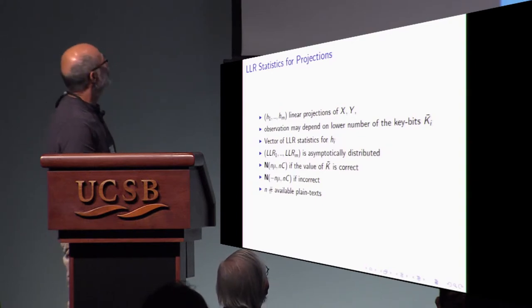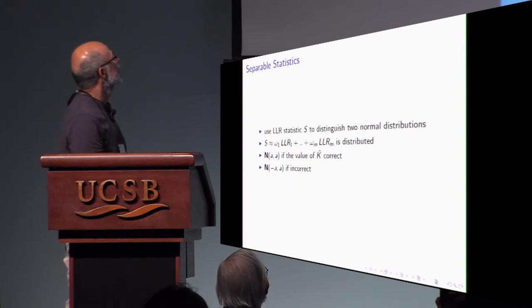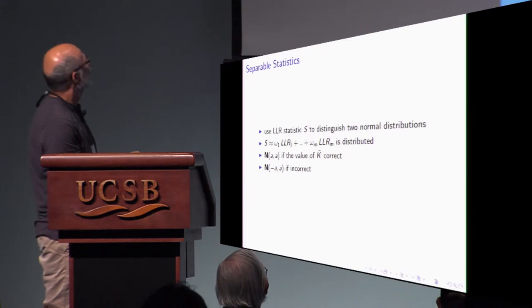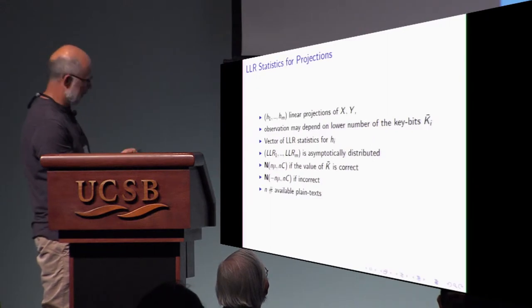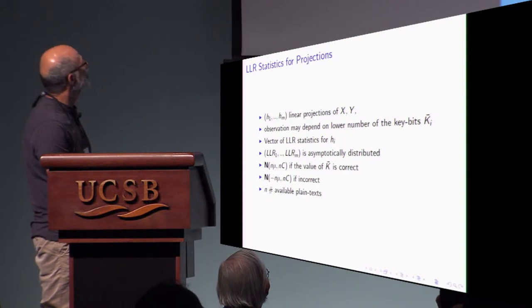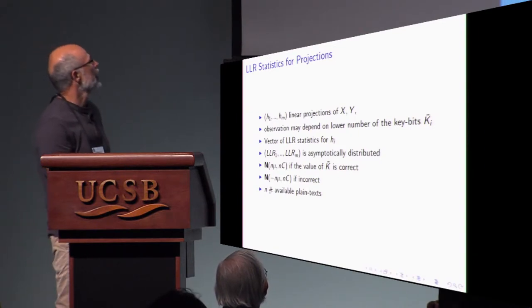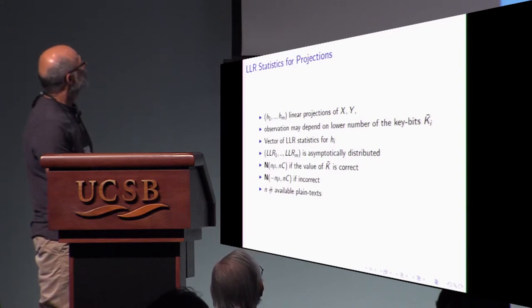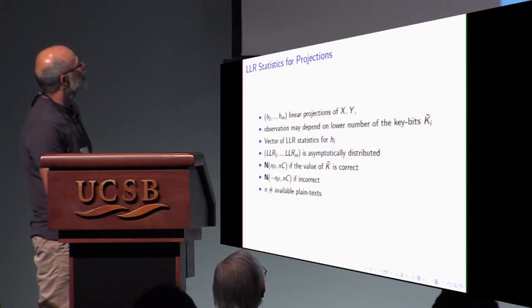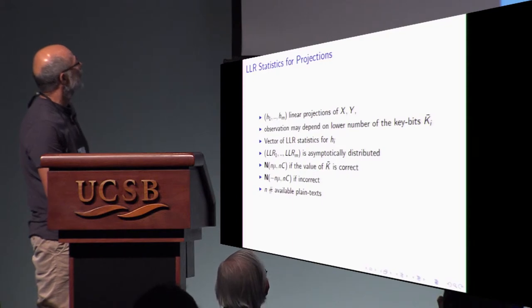So instead, we propose to use a number of projections. We know distribution of this vector, so we can compute distribution of this vector. These are projections of this vector. We use only linear projections. This is more easy to use. And each projection may depend on low number of key bits. And that is quite important fact.